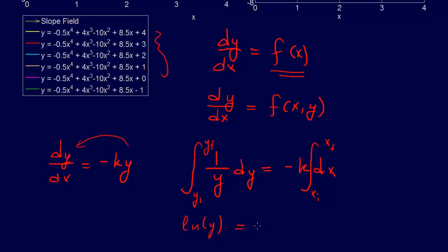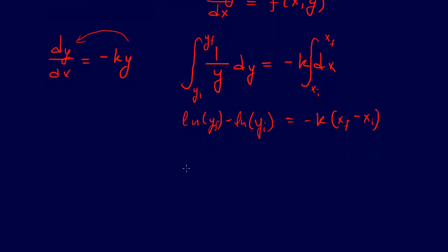Since we're doing a definite integral with limits of integration, that will be ln(y_final) - ln(y_initial) = -k(x_final - x_initial). We can keep going. We can take e and make it a base for all of this.